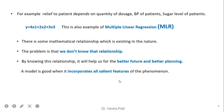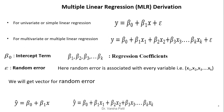There is some mathematical relationship which exists in nature, but the problem is that we don't know that relation. By knowing this relation we can do better planning. A model is good when it incorporates all salient features of the phenomenon. For multiple linear regression with k independent variables, the equation is y = β₀ + β₁x₁ + β₂x₂ + ... + βₖxₖ + ε, where ε is the random error.